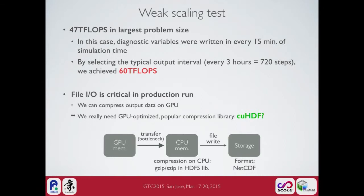The 47 teraflops was achieved in the largest problem, where diagnostic variables for monitoring were written to files every 50 minutes of simulation time — a very frequent output interval. By selecting the typical output interval for the production run, which is every three hours, we achieved 60 teraflops. This result suggests that file I/O is very critical and not ignorable for the production run.